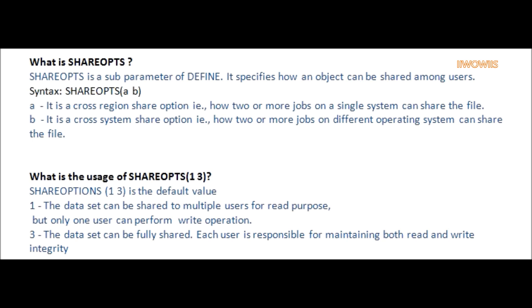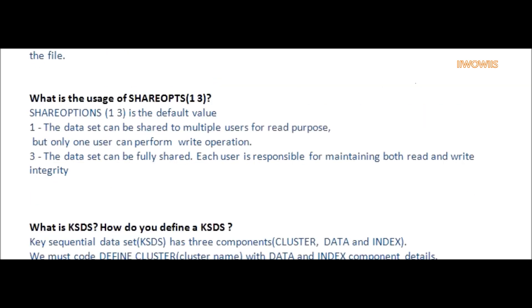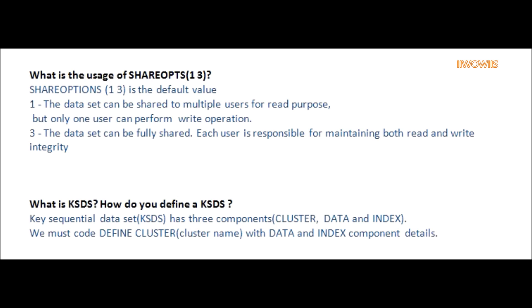Question: What is the usage of ShareOPTS 1-3? Answer: ShareOPTS 1-3 is the default value. One specifies the data set can be shared to multiple users for read purpose, but only one user can perform write operation. Three specifies the data set can be fully shared, and each user is responsible for maintaining both read and write integrity.